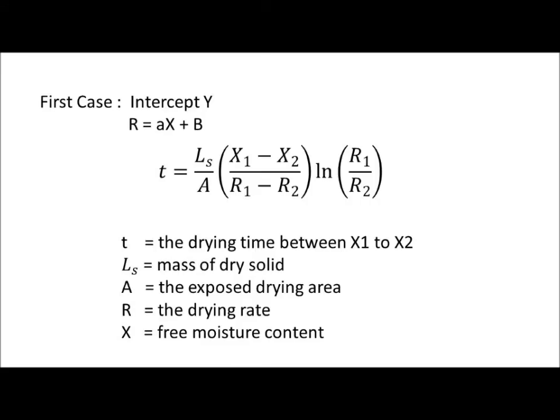There are two such cases. First, when the falling drying rate, R, is a linear function of x, given that R equals a times x plus B, in which a represents the gradient, while B represents the y-intercept. Drying time required can be calculated using this formula.